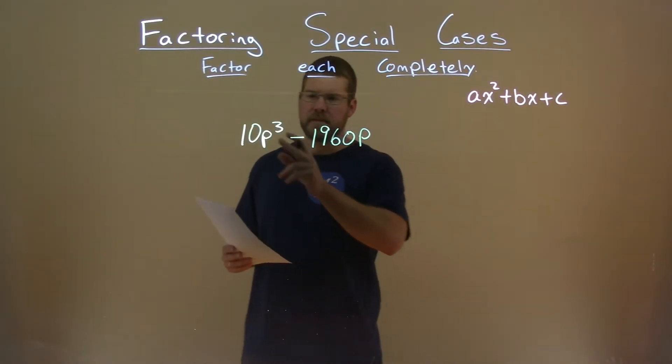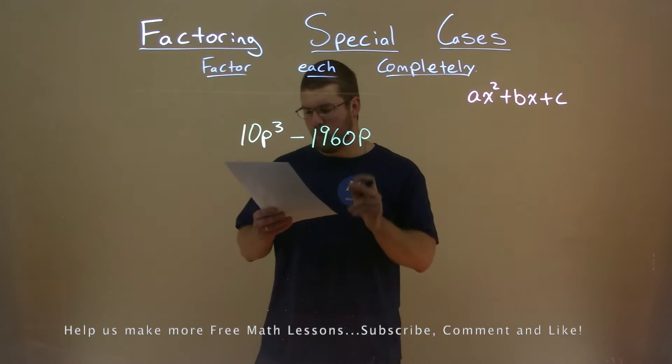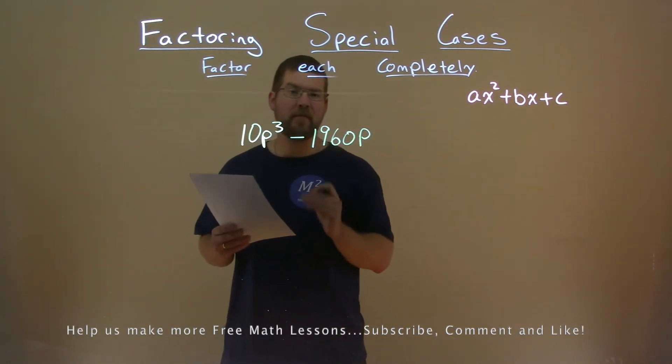We're given this problem right here, 10p to the third power minus 1,960p, and we need to factor this completely.